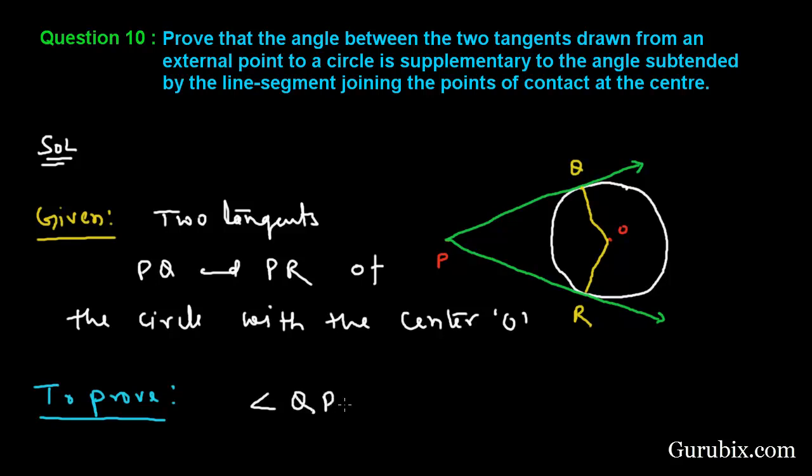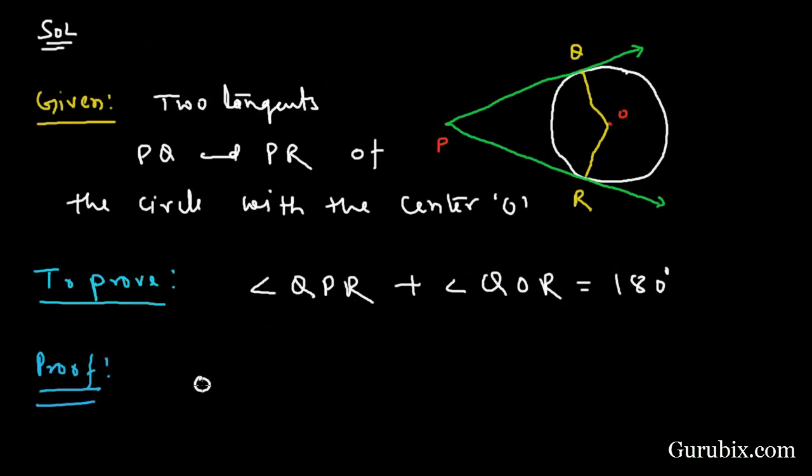We have to prove that angle QPR plus angle QOR equals 180 degrees. Let us prove it. OQ is perpendicular to PQ and OR is perpendicular to PR, and the reason behind both these lines is that radius